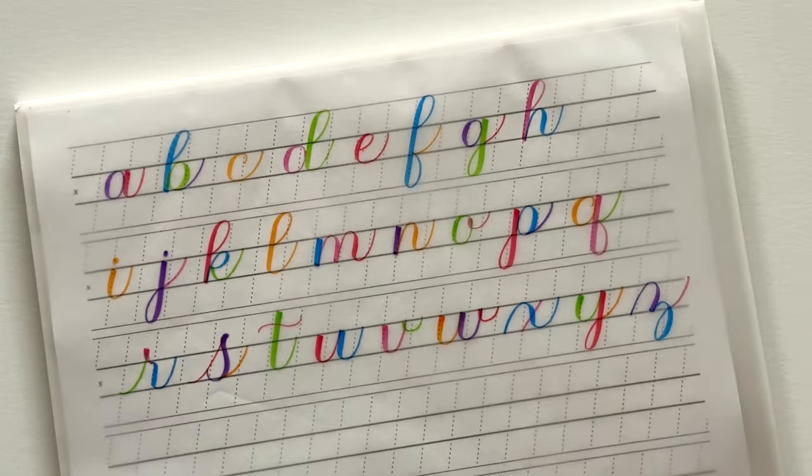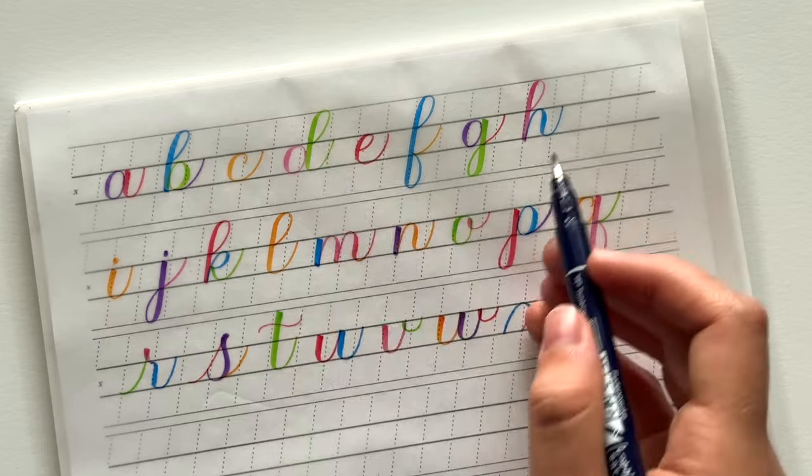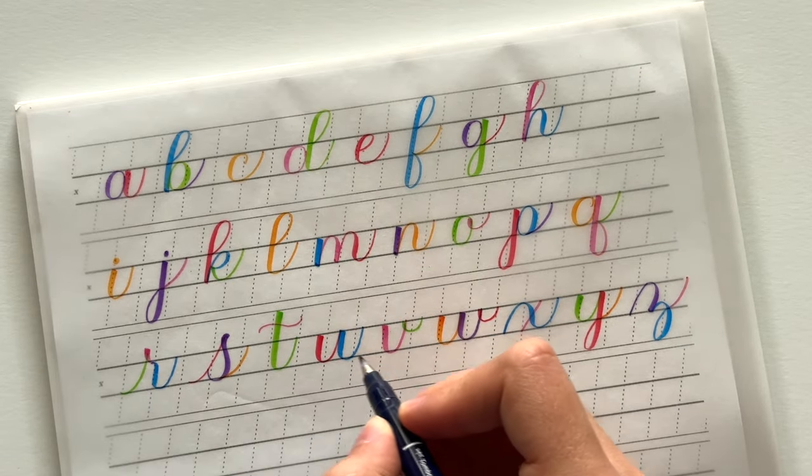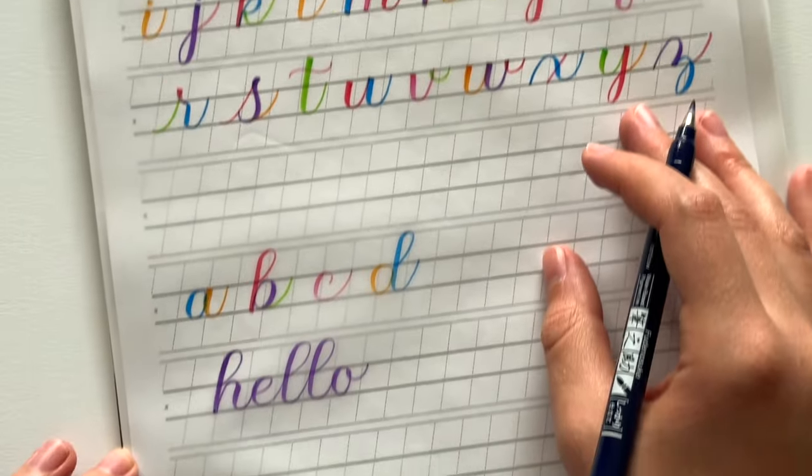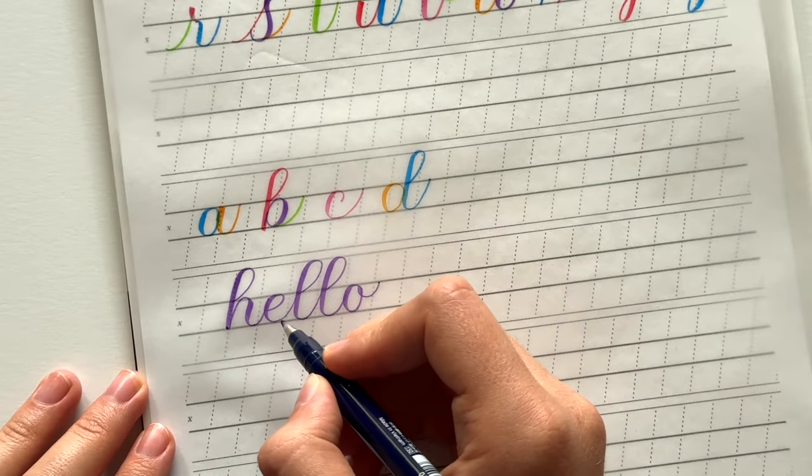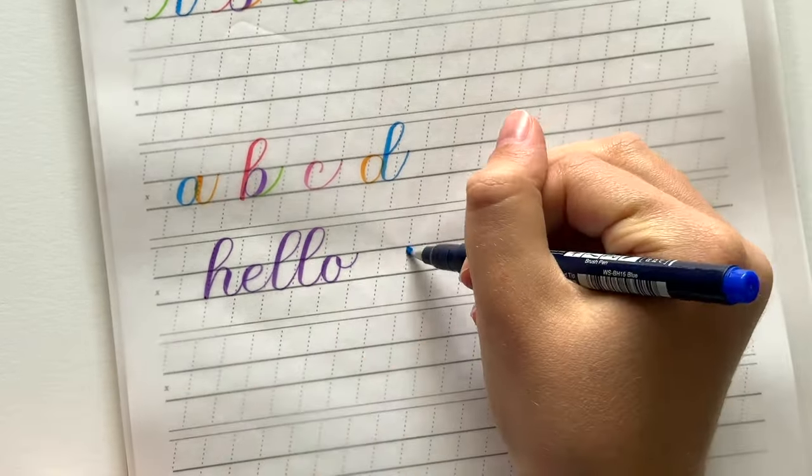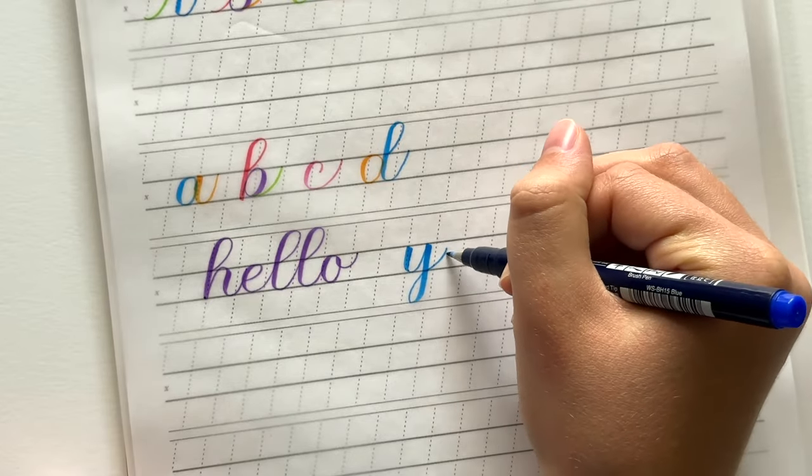So you'll notice that each of the letters in the alphabet ends with some sort of exit stroke like this. These strokes serve as the connecting line to the next letter in a word. And that's how you connect letters and write words in calligraphy.